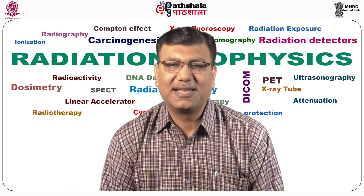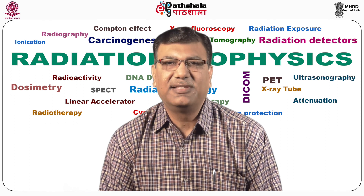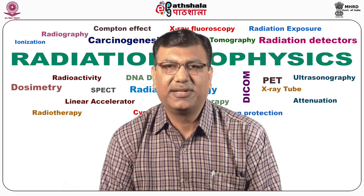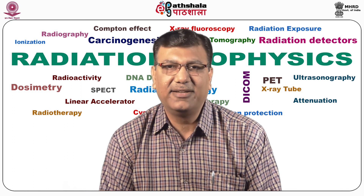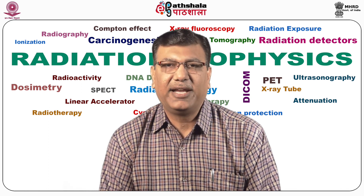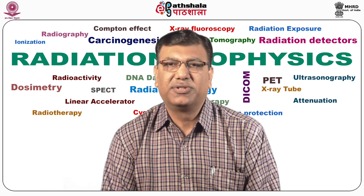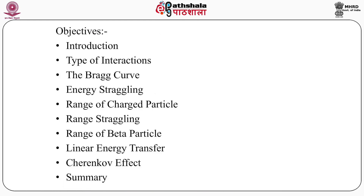In the coming slides, we will see how these particles interact, how these particles are measured, dose measured, detected, and the knowledge of this is used in cancer treatment. The objectives of our present topic are: types of interactions, the Bragg curve, energy straggling, range of charged particles, range straggling, range of beta particles, linear energy transfer, Cherenkov radiations, and a summary of all these.